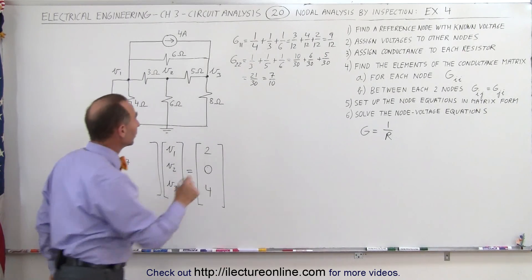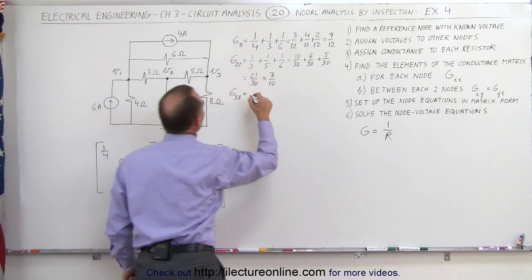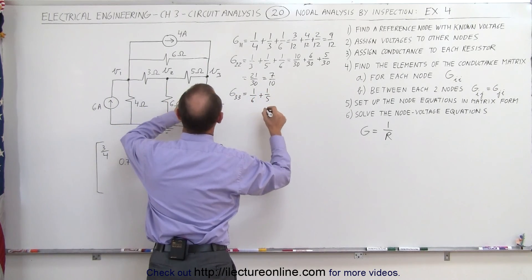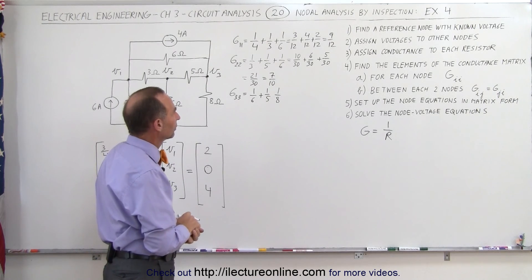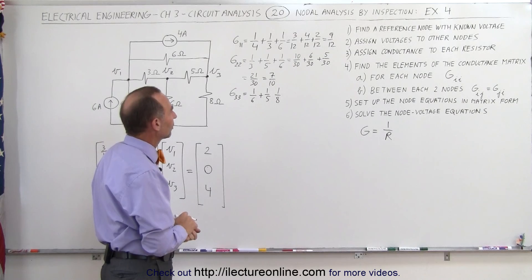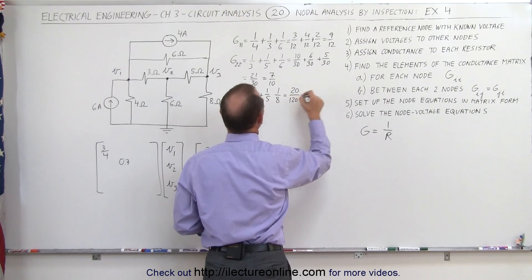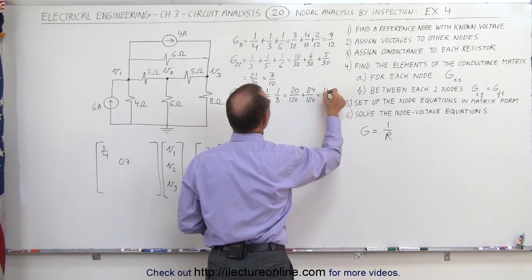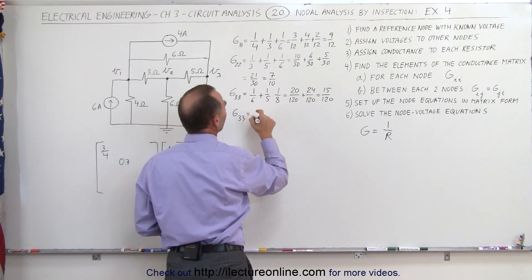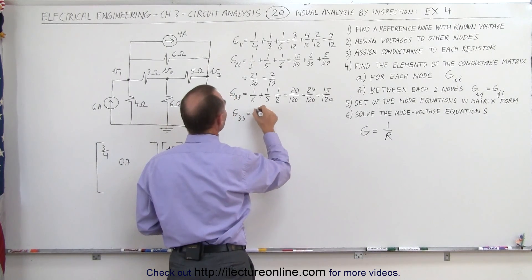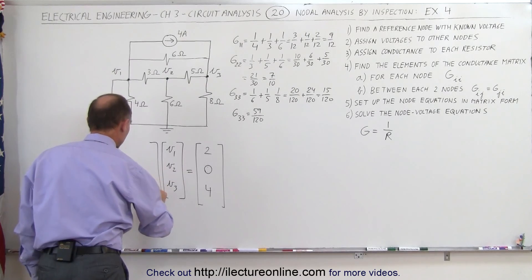The third diagonal element, G33, is all the conductances directly connected to the third node. We have the six ohm resistor: one over six; the five ohm resistor: one over five; and the eight ohm resistor: one over eight. The common denominator is one hundred and twenty. That gives twenty over one twenty, plus twenty-four over one twenty, plus fifteen over one twenty. Adding those together gives fifty-nine over one twenty. Since fifty-nine is a prime number it cannot be simplified, so G33 equals fifty-nine over one twenty.